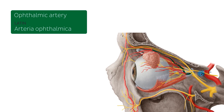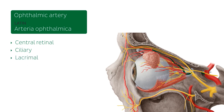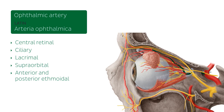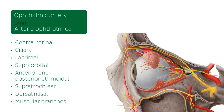Right now the main focus is the ophthalmic artery, which is highlighted in green, and which gives numerous branches such as the central retinal artery, the ciliary, the lacrimal, the supraorbital, the anterior and posterior ethmoidal, the supratrochlear, the dorsal nasal, and finally some muscular branches that we are going to be seeing as well.